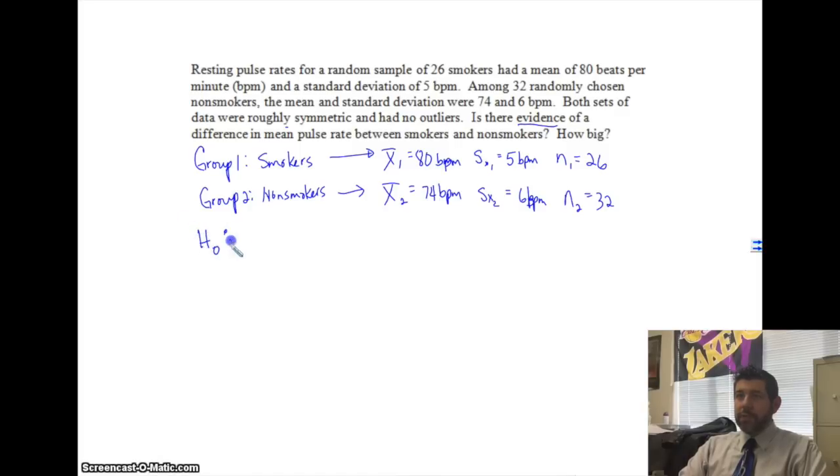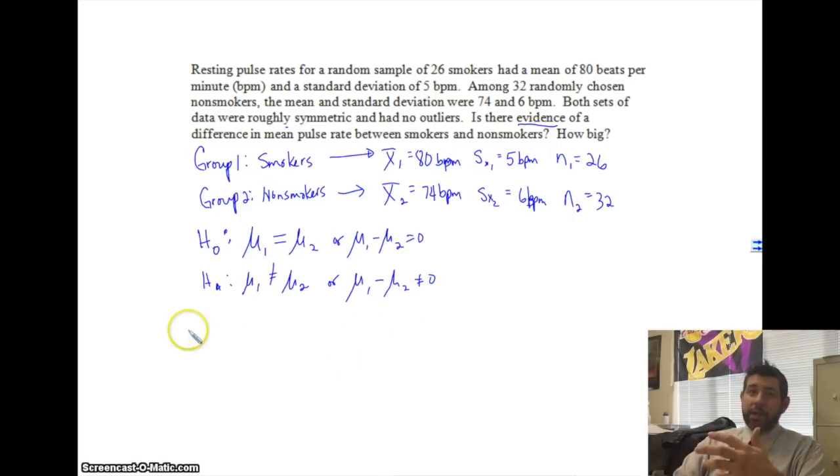Here's what we do. Our first thing is we need our null and our alternative hypothesis. So, our null hypothesis is that mu one is equal to mu two, right? That there is not a difference. You can also write that if you want mu one minus mu two equals zero. Our alternative hypothesis is mu one is not equal to mu two. You can also say mu one minus mu two is not equal to zero.